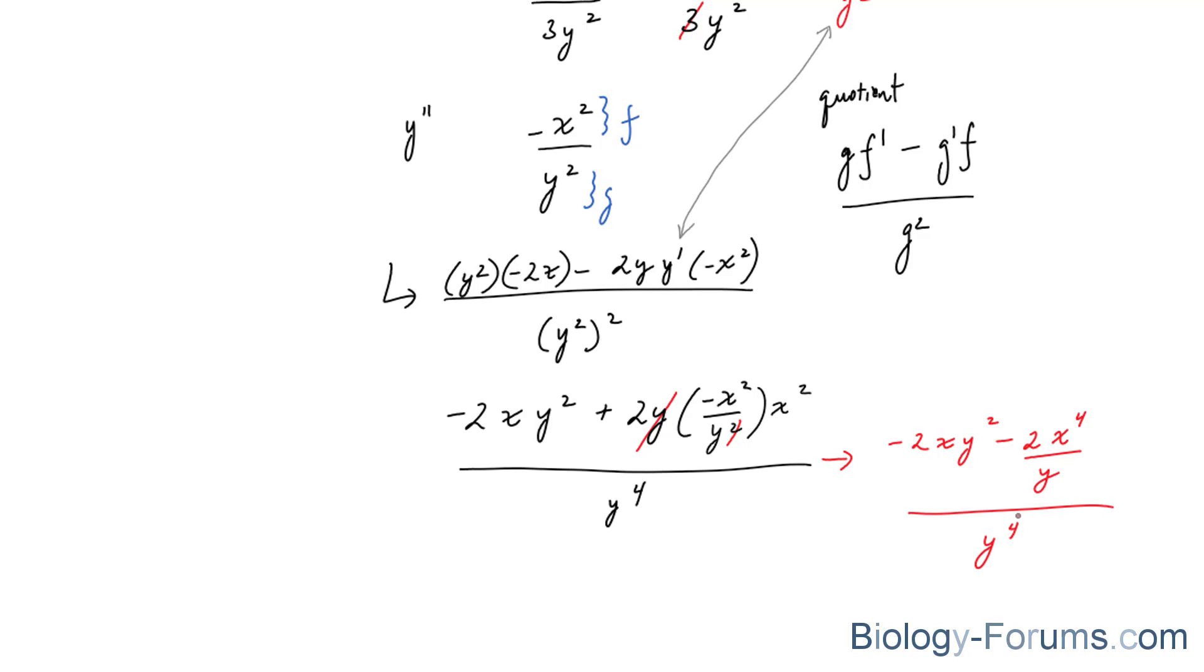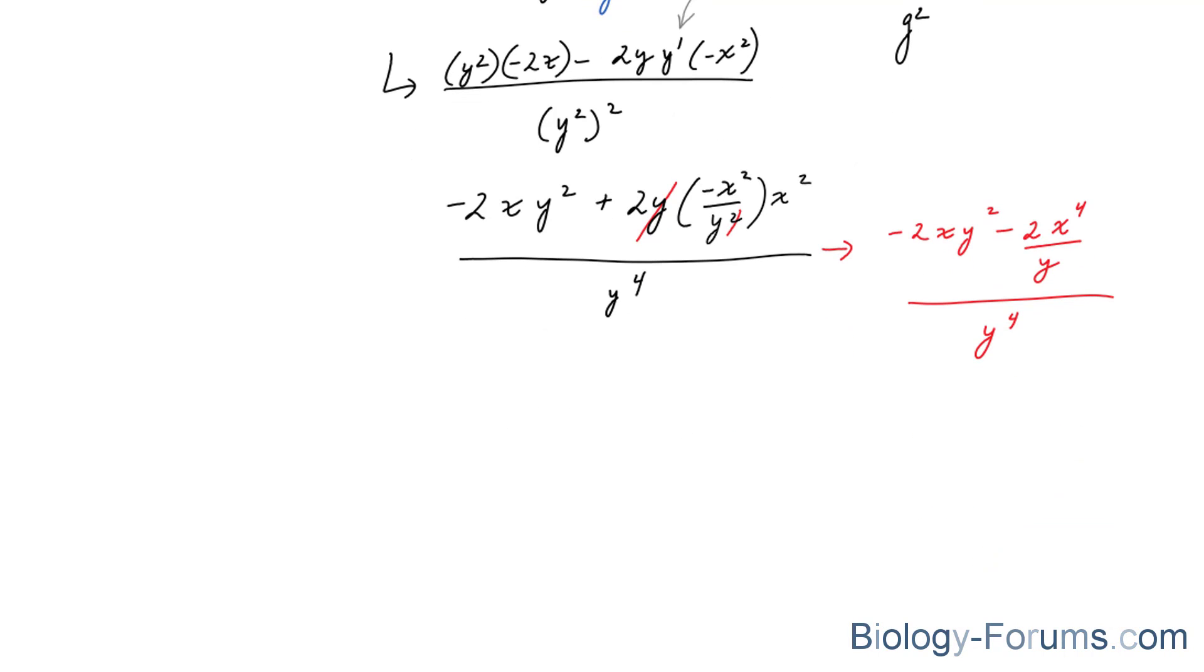Now, many students will stop right there. But I see potential in this question. And the reason why I do is because if I multiply the bottom and the top by simply y, what happens to the top is, well, this y multiplies to both of these terms. And you end up with negative 2xy to the power of 3. And this term multiplied to this term gives us negative 2x to the power of 4. Pretty much, we got rid of this fraction here. And on the bottom, we have y to the power of 5.